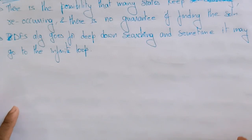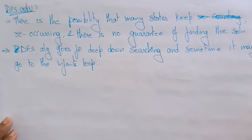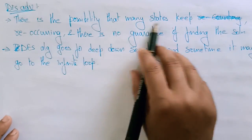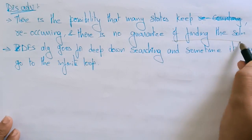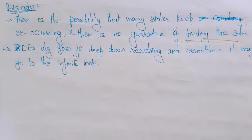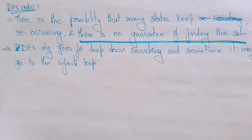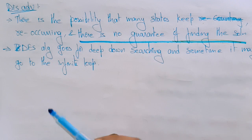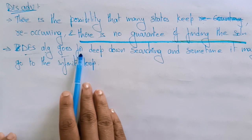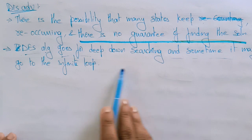What about the disadvantages? There is a possibility that many states keep recurring and there is no guarantee of finding the solution. Whereas in BFS, even though it takes more time and space, it will find the goal node. In depth first search, there is no guarantee of finding the solution because it can fall into an infinite loop condition.